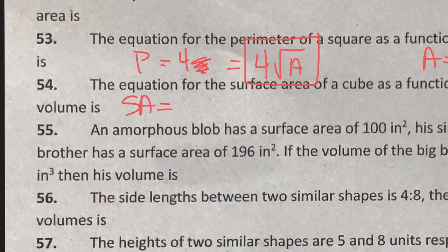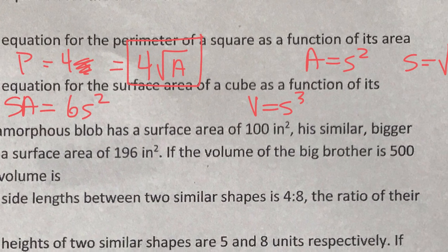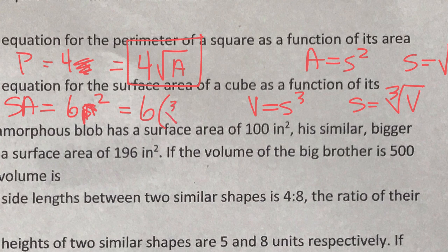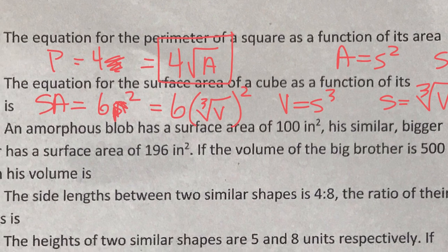The equation for the surface area of a cube as a function of its volume. Surface area is 6s squared and volume is s cubed. So the side length is found by taking the cube root of the volume. That goes in here — 6 times the cube root of the volume, squared. There's nothing we can do because squaring doesn't undo cube rooting. So we have to leave it like that. Pretty ugly, but such is life sometimes.